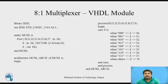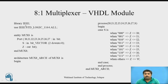This is the VHDL module for the 8-to-1 multiplexer. The first two lines are compulsory, which must be written in the code — that is the library declaration, specifying which library and which packages you are using. We are using library IEEE, and from that library we are using package IEEE.std_logic_1164. From that package we are using all items.